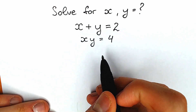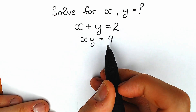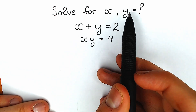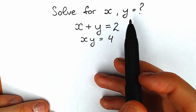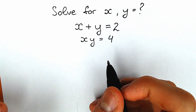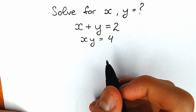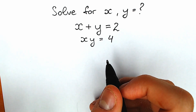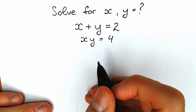x plus y equals 2 and xy equals 4. We need to find x and y. If you have your solution, write your answer down into the comment section real quick, and in a few minutes we will check our answers.